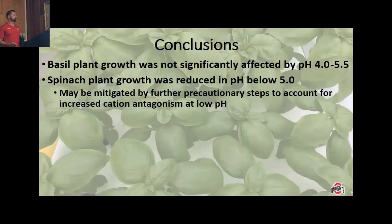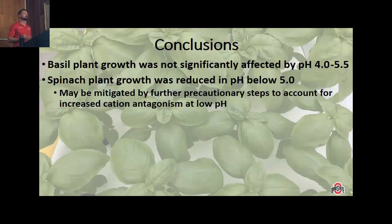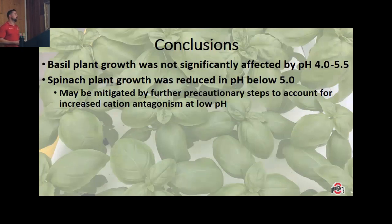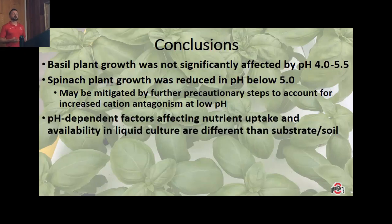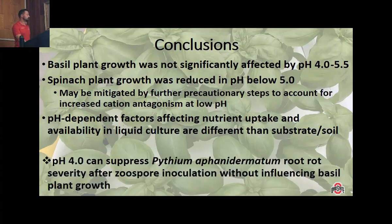In conclusion: basil plant growth was not significantly affected by pH 4.0 to 5.5, while spinach plant growth was significantly reduced below pH 5.0. Basil's seemingly low nutrient requirement is likely responsible for its tolerance to acidity, and spinach's reduction in growth at pH 4.5 may be mitigated by further precautionary steps to account for increased cation antagonism as pH decreases. The pH-dependent factors affecting nutrient uptake in liquid culture hydroponic systems are much different than those in substrate or soil systems. Most importantly, pH 4.0 can suppress Pythium asanidemetrum root rot severity after zoospore inoculation without influencing basil plant growth.